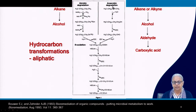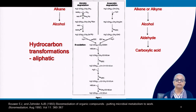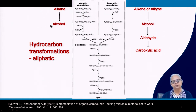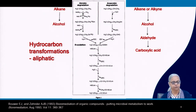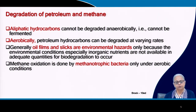Unsaturated aliphatics — alkenes and alkynes, which are double- and triple-bonded — will be converted to alcohol, aldehyde and carboxylic acid, which can then enter the Krebs cycle and be completely mineralized. However, they cannot be converted under anaerobic conditions because that beta oxidation step is not possible. That is one part of the story in terms of biodegradation of xenobiotics.